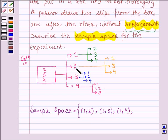if the first slip has number 2, then the other three sample points are (2, 1), (2, 3), and (2, 4).